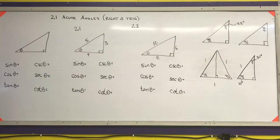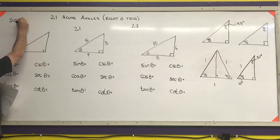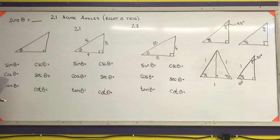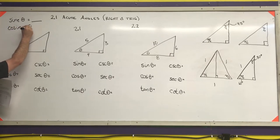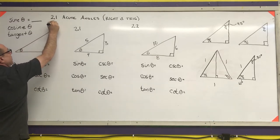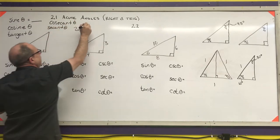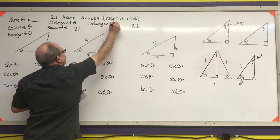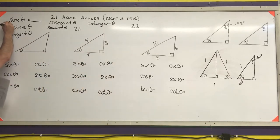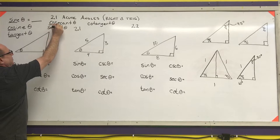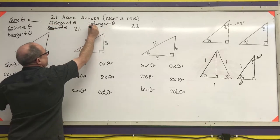The first thing I want to talk about are the six trigonometric functions. Each trig function takes an angle and gives us some sort of number. The six functions are: sine, cosine, tangent, cosecant, secant, and cotangent. These are typically abbreviated with three letters: sine is SIN, cosine is COS, tangent is TAN, cosecant is CSC, secant is SEC, and cotangent is COT.